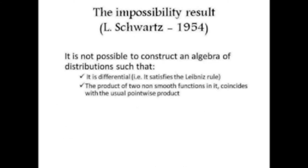We want to do the same thing with distributions: construct an algebra which is differential, meaning it satisfies the Leibniz rule, and such that when we restrict this algebra to usual functions we get the usual pointwise product. One can prove that if such a natural extension existed, we could preserve the product for smooth functions, but not for functions which are not smooth.